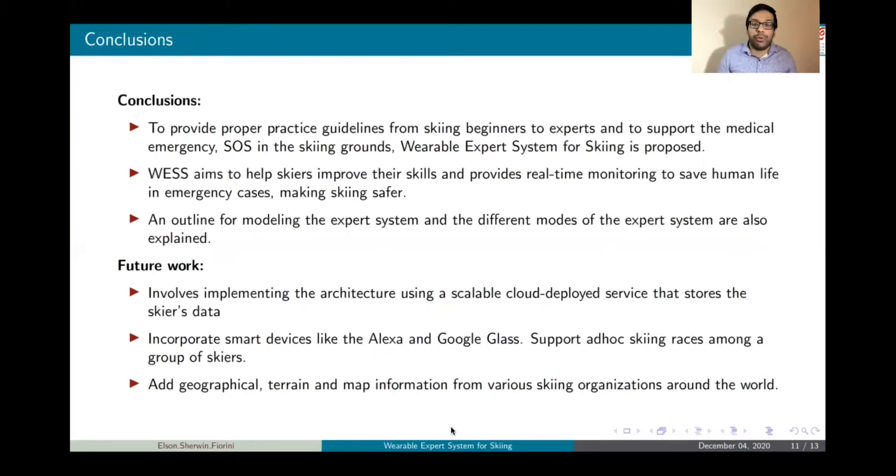Conclusions. To provide proper practice guidelines for skiing from beginners to experts and to support medical assistance in case of an emergency and to help the skier, the wearable expert system for skiing, WESS, is being proposed. WESS aims to help the skiers improve their skiing skills by providing real-time monitoring and also feedback to the expert system. And it also helps to save human life in case of any emergencies, making skiing safer. An outline for modeling the expert system and the different modes of the expert system is also mentioned in this paper.